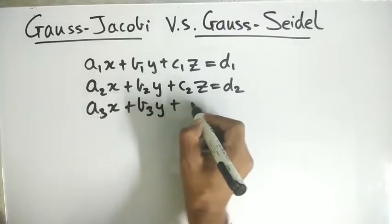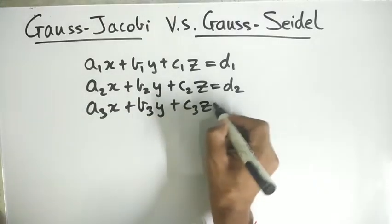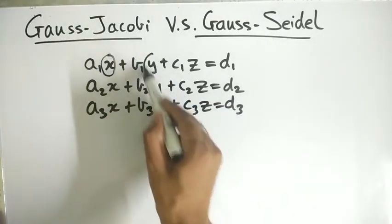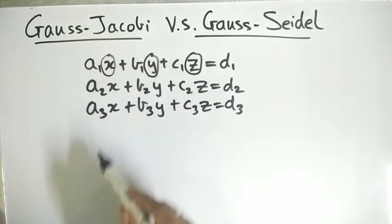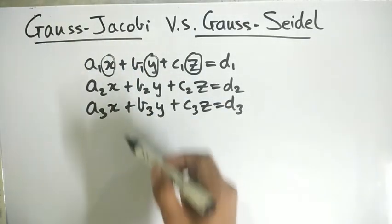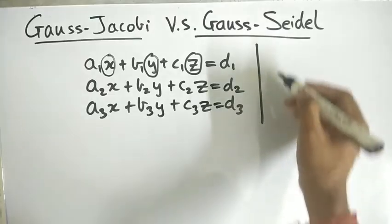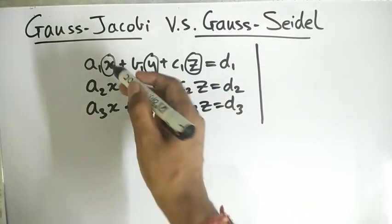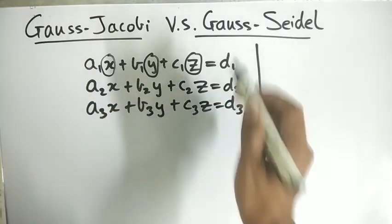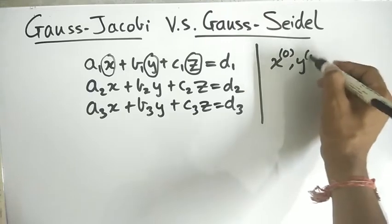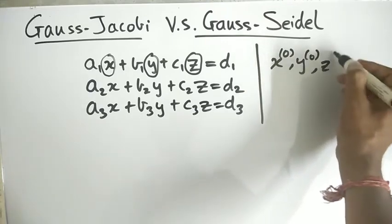So we have this kind of system of equations and we need to solve to find x, y, and z. In both these methods, we take a particular starting approximation. Let's say the approximation be the first starting point, the starting input to x, y, z. Let them be x0, y0, and z0.